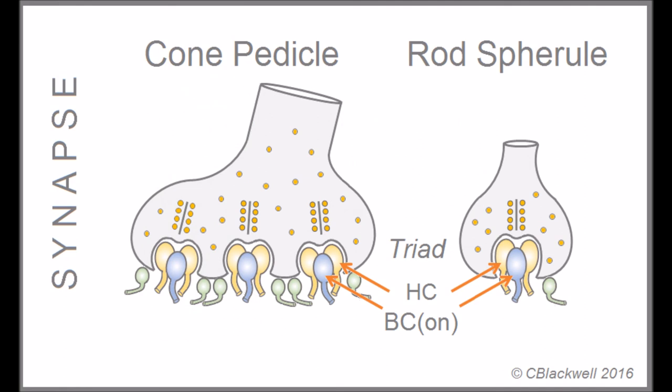At the end of the photoreceptor is the synapse, which communicates to other cells in the retina. But not just one intermediate cell, but a variety of cell types. Nothing is simple in the retina.